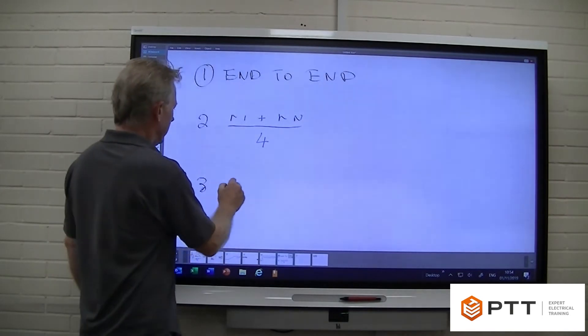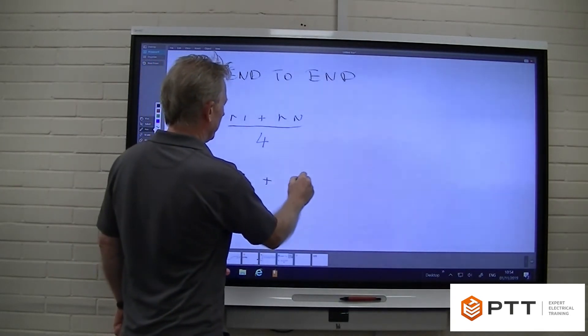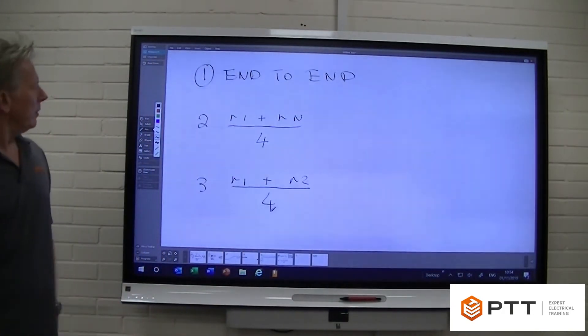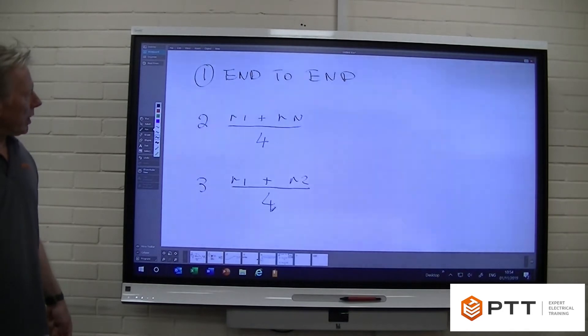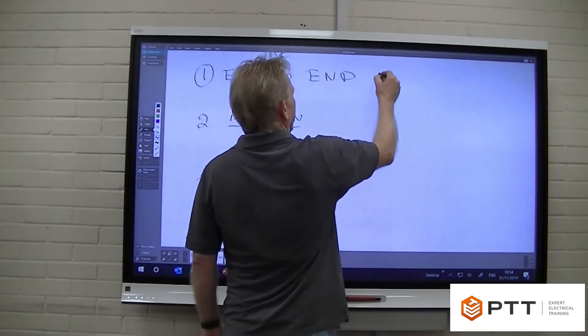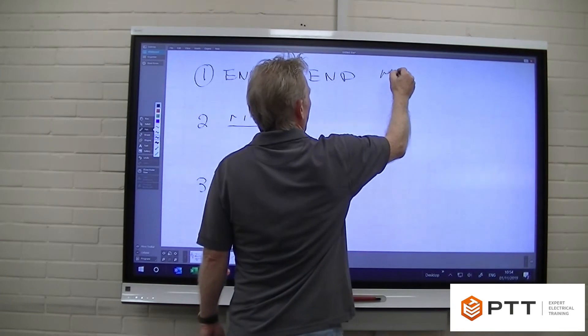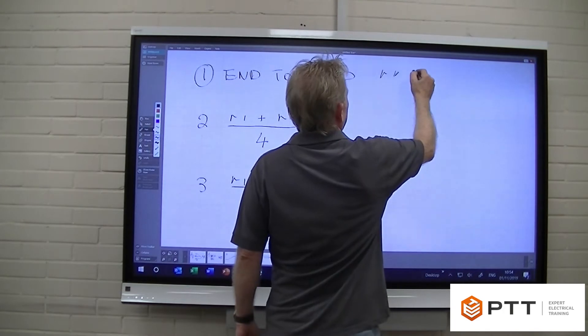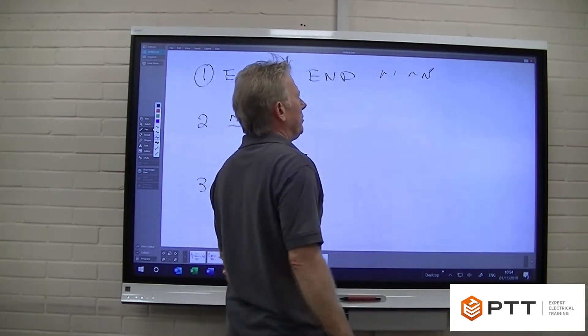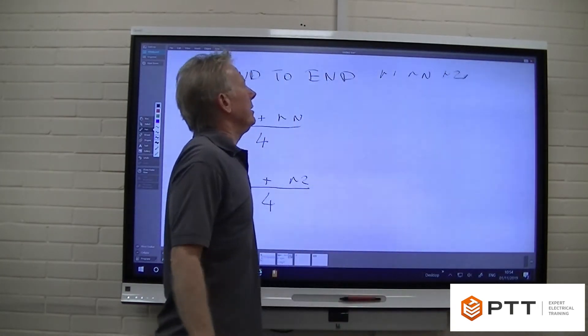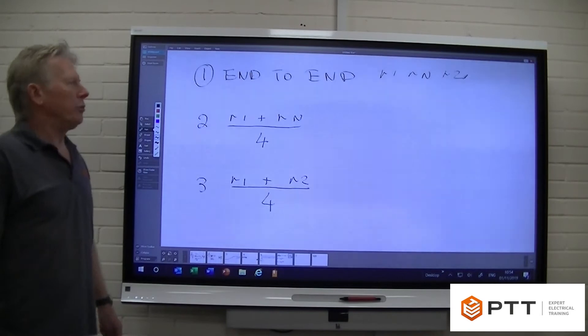The third test is little r1 plus little r2. We're going to divide that by four, and then we're going to make a cross connection and test that. So what is this little r1 and little rn? Well, that is actually the results from the first test, because what we end up with here is little r1 – that's end-to-end with our line conductor – little rn, which is end-to-end with our neutral conductor, and little r2, which is end-to-end of our actual CPC.